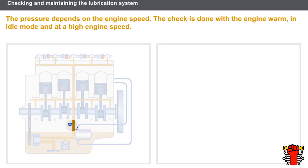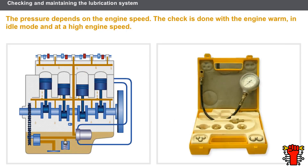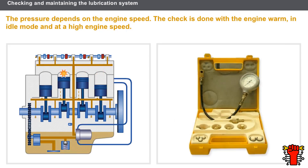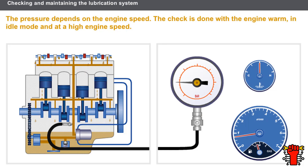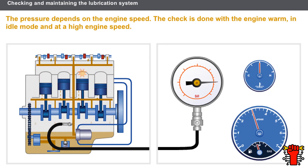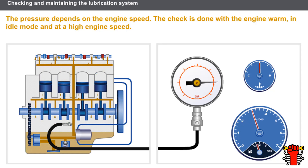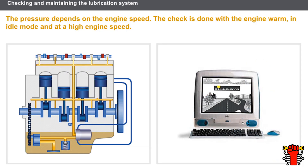A pressure sensor on the lubricating oil system tells the driver when there is a pressure fault, after which a check is required using special tools. The pressure depends on the engine speed. The check is done with the engine warm, in idle mode and at a high engine speed. You should consult the technical documentation to find out about the checking procedures.